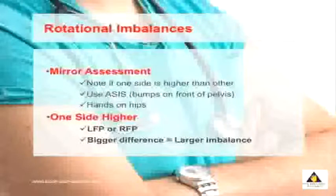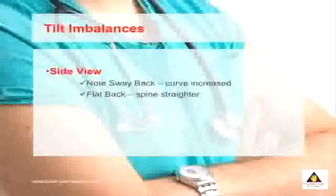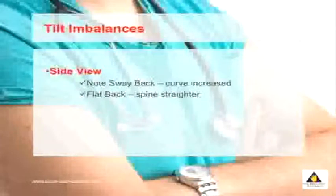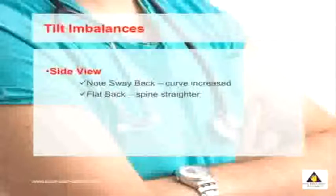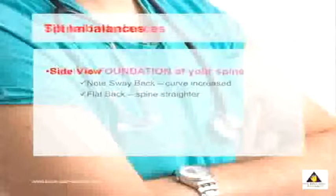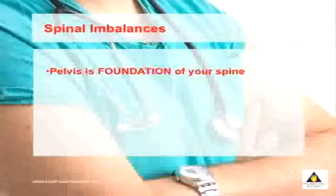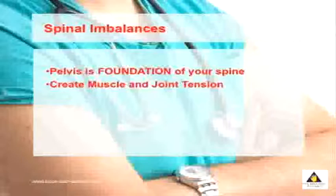The bigger the height change, the bigger the imbalance occurring in your spine. You can also look at the side view of your posture — this detects what's called a tilt type imbalance, where you can have a sway back where the curve in your low back is much greater, or you may have a flattened spine. The pelvis is the foundation of your spine, and imbalances centered here can create pain throughout your spine, causing both muscle and joint tension.